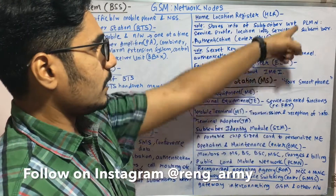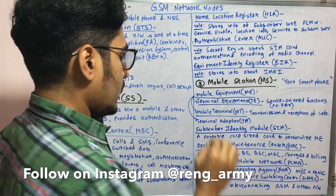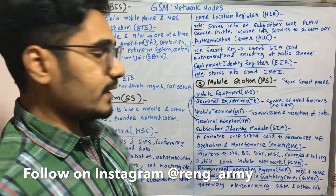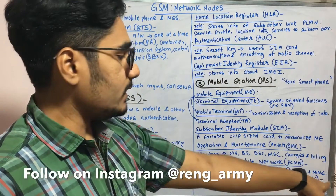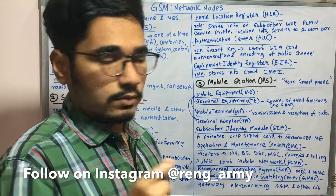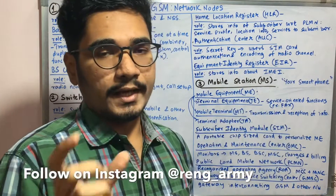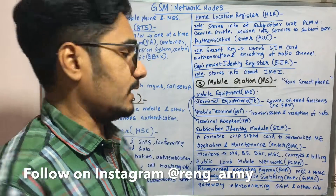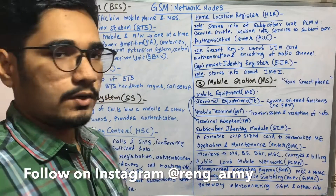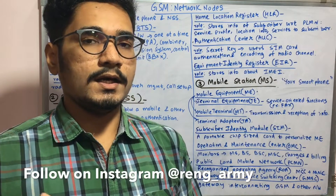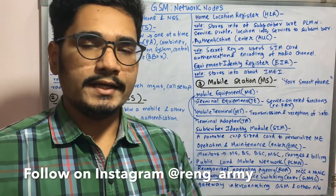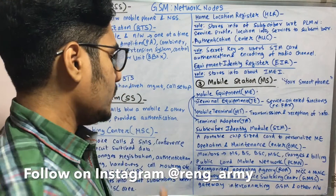The Public Land Mobile Network (PLMN) is a recognized operating agency (ROA) that has two components: Mobile Country Code (MCC) — like +49 or +91 — and Mobile Network Code (MNC), which is your 10-digit number. It is the organized agency of a particular area that facilitates mobile communication, such as Airtel, Vodafone, Jio, and AT&T.